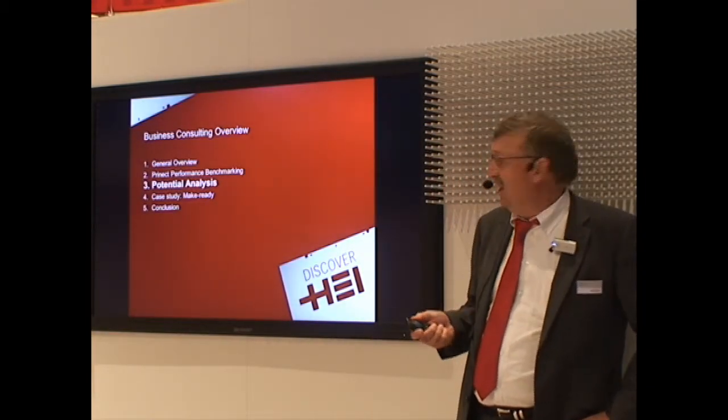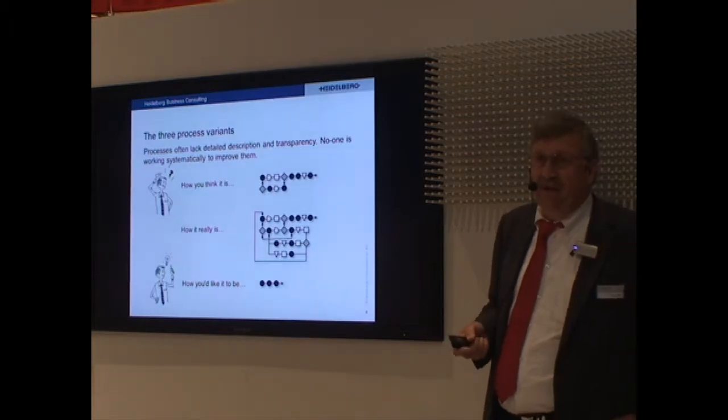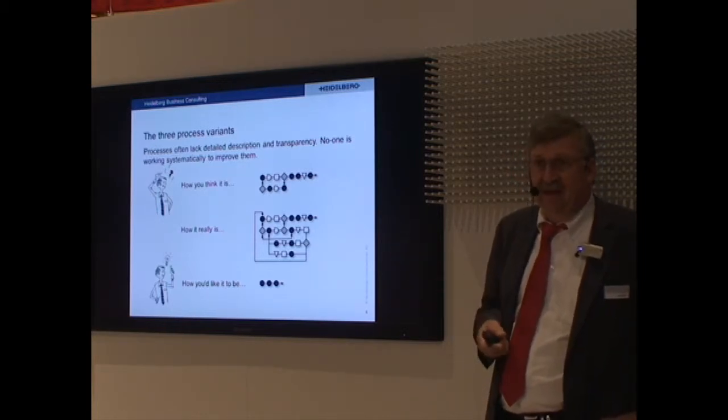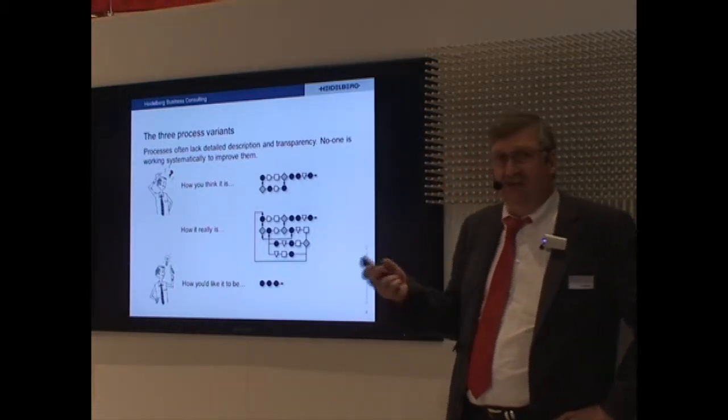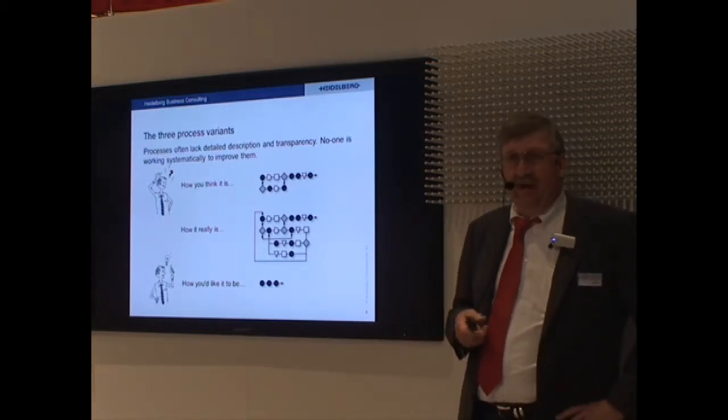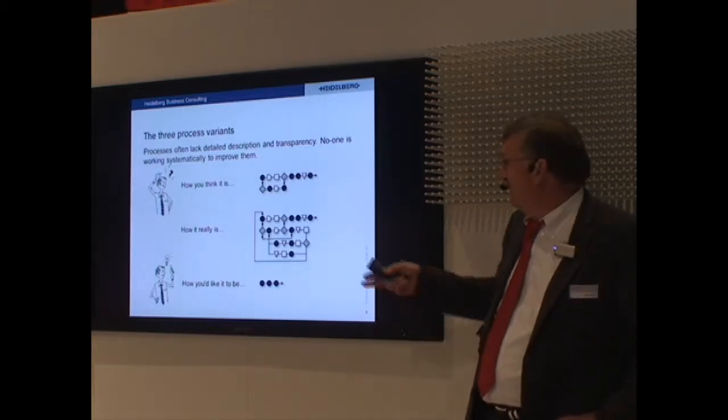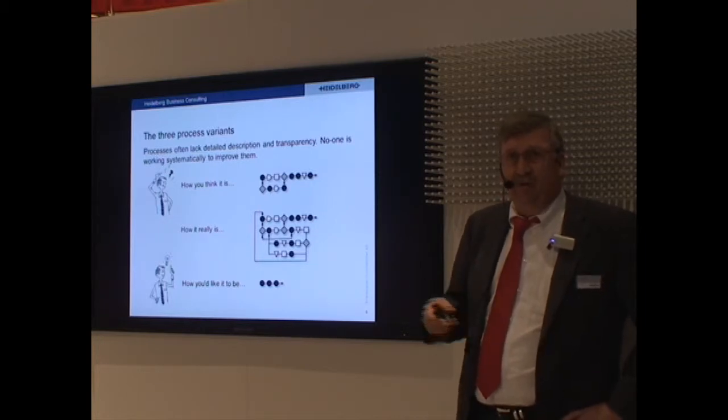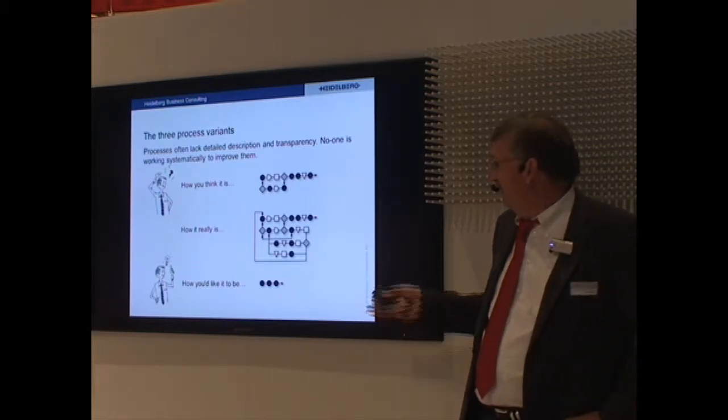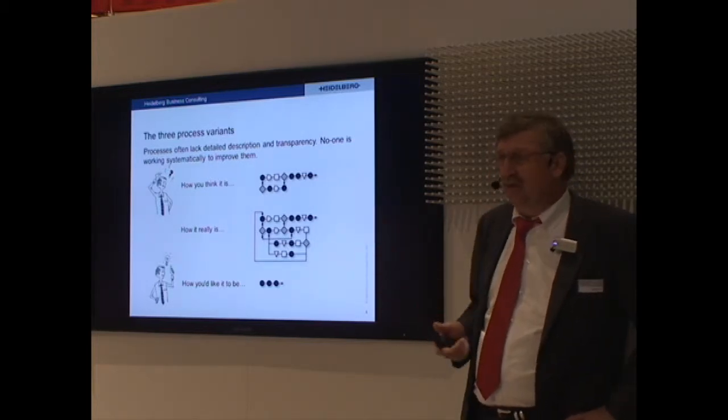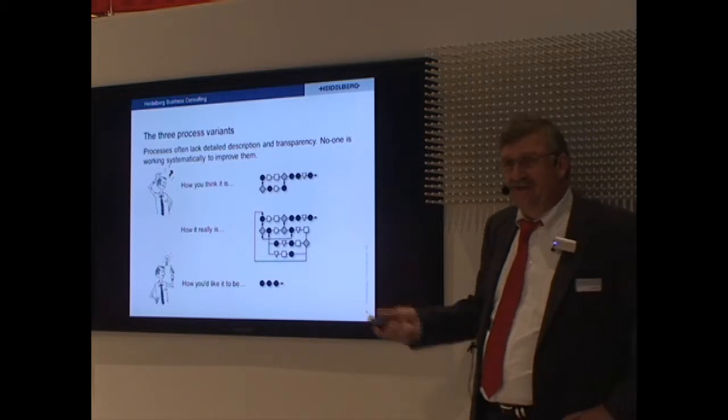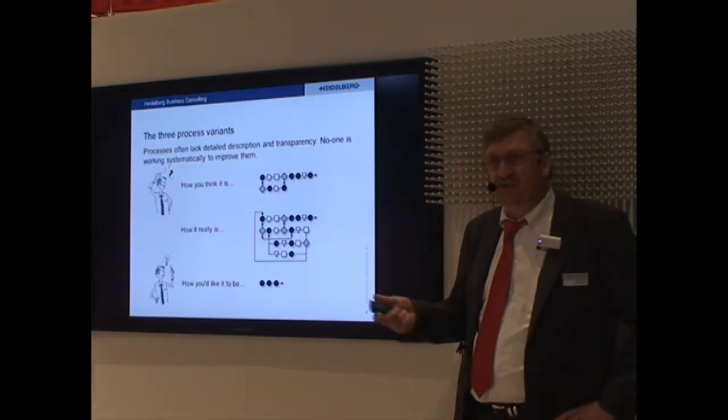I'd like to come to the topic of process analysis. In the process analysis we speak of three different processes. The first one is the one as you think it is. It's the one that you would explain to somebody in your office of how something works in your company or in your department. When we go into your company and we do an analysis of how the processes are, we will come out with the second one. The one how it really is. Much more complicated, usually many more exits, many more questions and very many places that we can find improvement. And the last one is the way you would like it to be. A simple, very easy process that comes to a conclusion, that comes to results quickly.